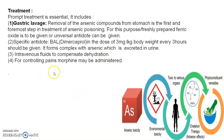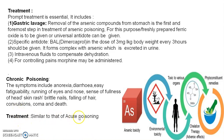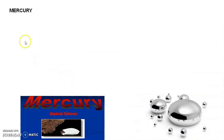For controlling pain, morphine may be administered as a potent analgesic. Chronic arsenic poisoning symptoms include anorexia, diarrhea, easy fatigue, running of the eyes and nose, feeling of fullness in the head, skin rash, brittle nails, falling of hair, convulsions, and coma. The treatment of chronic arsenic poisoning is the same as acute poisoning: gastric lavage, specific antidotes, intravenous fluids for dehydration, and morphine for pain.